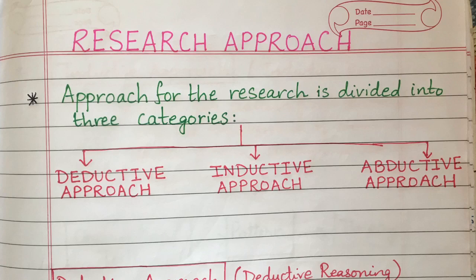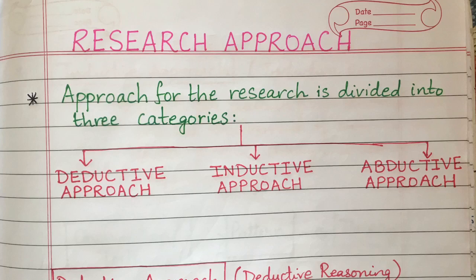A research approach can be divided into three categories: deductive approach, inductive approach, and abductive approach. The relevance of hypothesis is central here. A hypothesis is a logical supposition or a reasonable guess — an educated prediction about the nature of the relationship between two or more variables that we expect to find in our study. It has to be tested, and it is made even before the proper research has started.